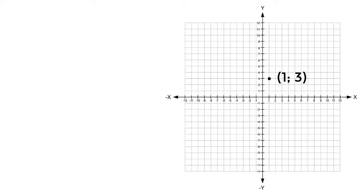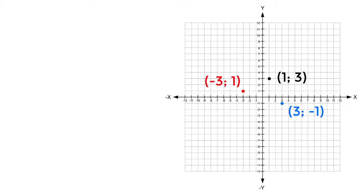After a positive 270-degree rotation, the coordinates will be (3, -1) — but in a negative 270-degree rotation, can you guess the new coordinates? Exactly: (-3, 1). Did you see the pattern in these changes? We can summarize this pattern in a table.